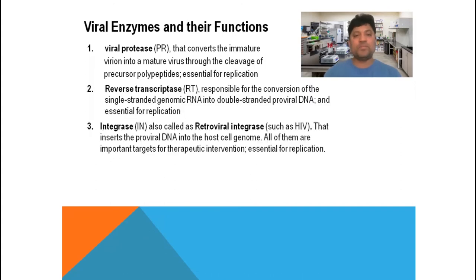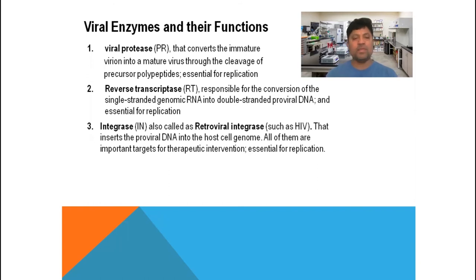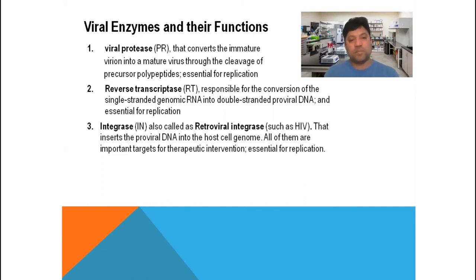The first enzyme is viral protease, which converts the immature virion into the mature virus through cleavage or breaking of the precursor polypeptide. It is essential for viral replication and viral reproduction. The second enzyme is reverse transcriptase, responsible for the conversion of single-strand genomic RNA into double-stranded proviral DNA, and is essential for replication.